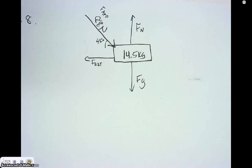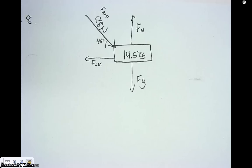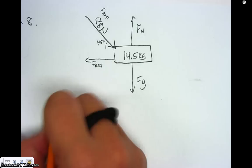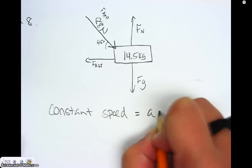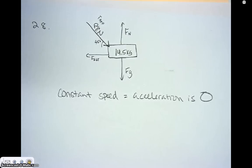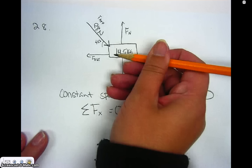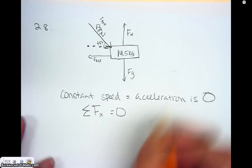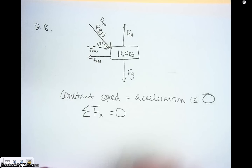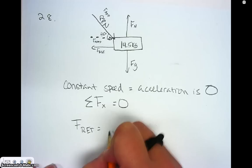Part B says calculate the horizontal retarding force. To solve this, I need to recognize that because something is going at a constant speed or constant velocity, the acceleration is zero. That means the sum of all forces in the x direction must equal zero. So I have the retarding force going one way, and a component of my applied force going in the x direction. For their net to be zero, they must be equal to one another — the retarding force equals the force applied in the x direction.